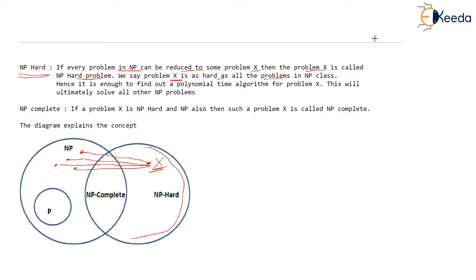Because these problems in NP are getting reduced to this problem X, we can say the problems in NP were already difficult and problem X is as difficult as all these problems in NP. So finding a polynomial time solution for problem X — if somebody solves problem X — then obviously all the problems in NP class would be solved.